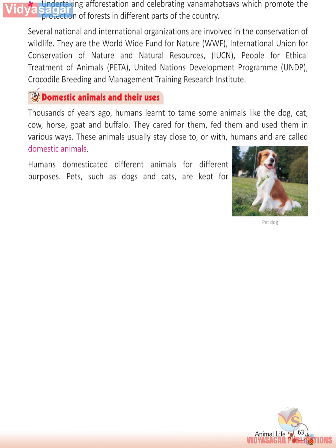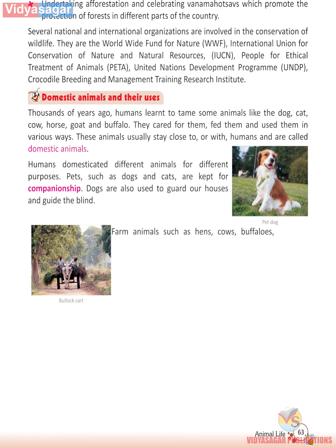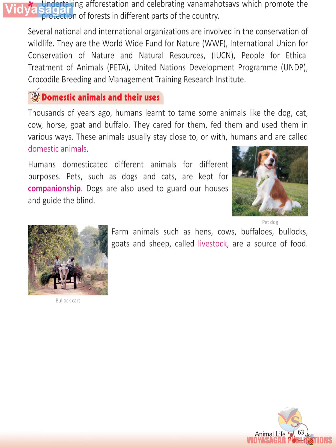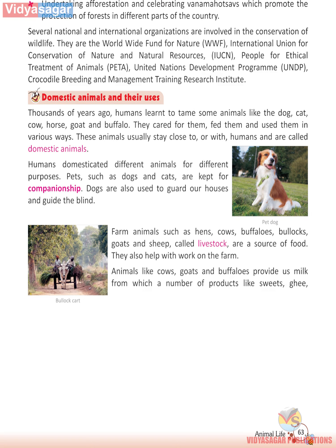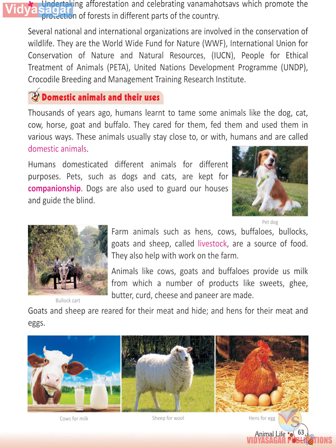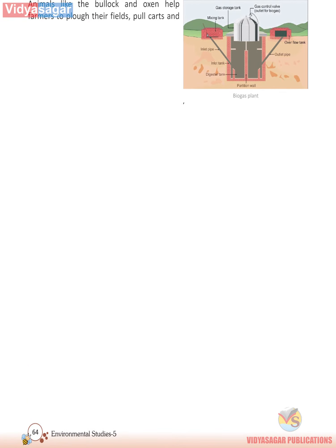Pets such as dogs and cats are kept for companionship. Dogs are also used to guard houses and to guide the blind. Farm animals such as hens, cows, buffaloes, bullocks, goats and sheep — called livestock — are a source of food and help with work on the farm. Animals like cows, goats and buffaloes provide us milk from which products like sweets, ghee, butter, curd, cheese and paneer are made. Animals like the bullock and oxen help farmers to plough their fields, pull carts and transport loads. Their solid waste or dung is turned into manure to fertilize the soil.